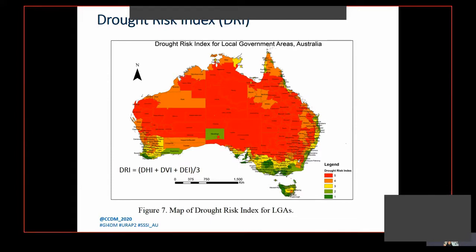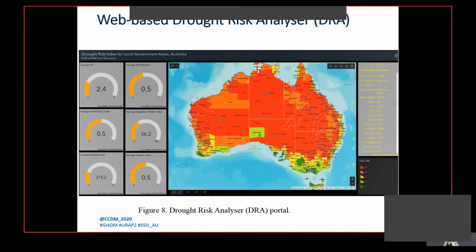The drought hazard index, drought vulnerability index, and drought exposure index were aggregated into a composite drought risk index using an equally weighted overlay method in ArcGIS. The aggregated index was classified into five categories based on quantile values from one to five, where one represents mild risk to drought and five represents extreme risk to drought. This is the final product of stage one.